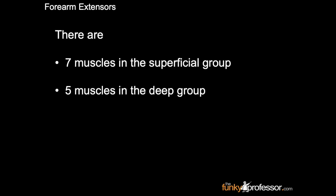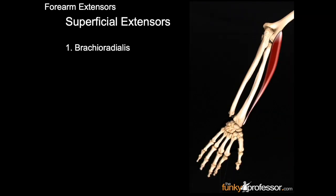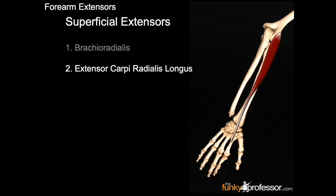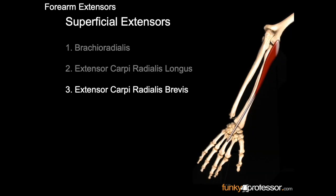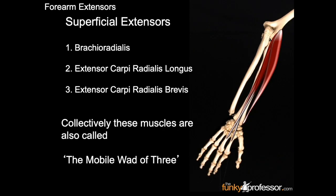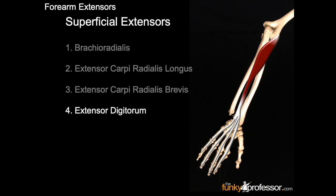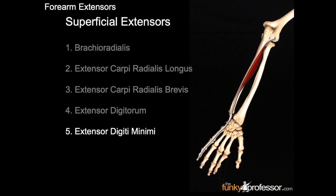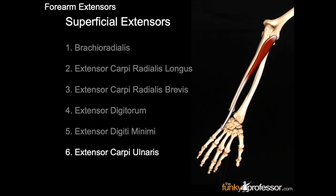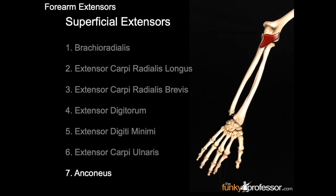There are seven muscles in the superficial group and five muscles in the deep group. The superficial extensors collectively include the mobile wad of three. Four: extensor digitorum. Five: extensor digiti minimi. Six: extensor carpi ulnaris. And seven: anconeus.